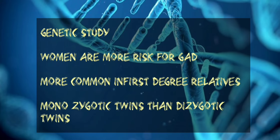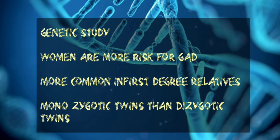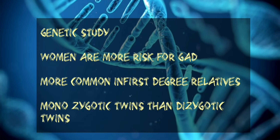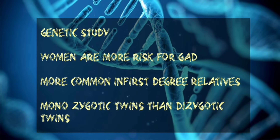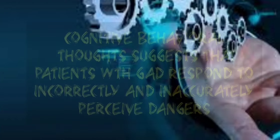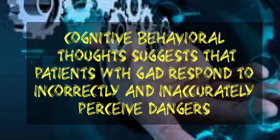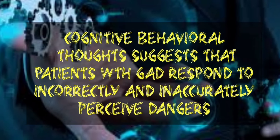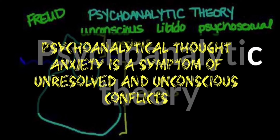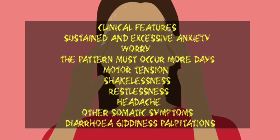Some genetic studies show that women are at risk of getting generalized anxiety disorder. It is more common among first-degree relatives and monozygotic twins than dizygotic twins. Psychosocial factors: cognitive behavioral therapy suggests that patients with GAD respond to incorrectly and inaccurately perceived dangers, and psychoanalytic thought suggests that anxiety is a symptom of unresolved unconscious conflicts.